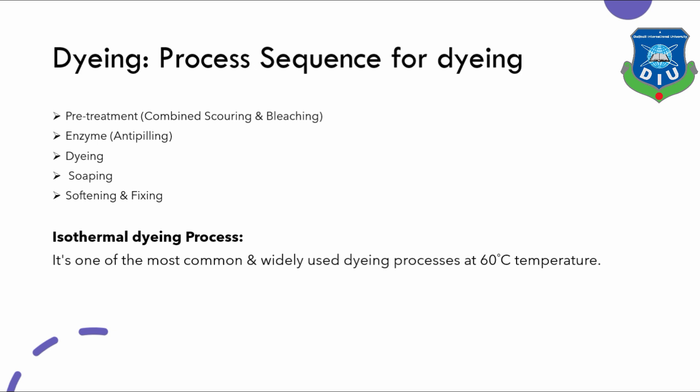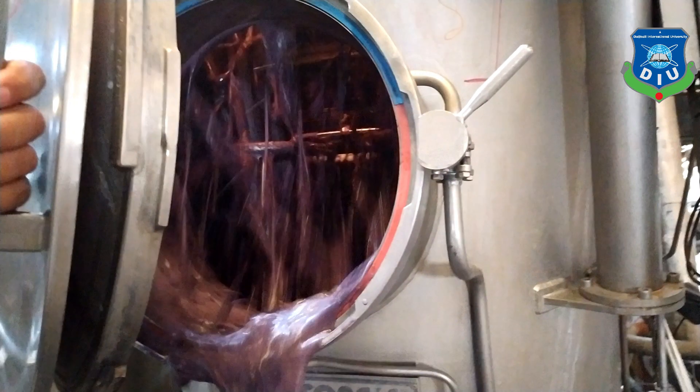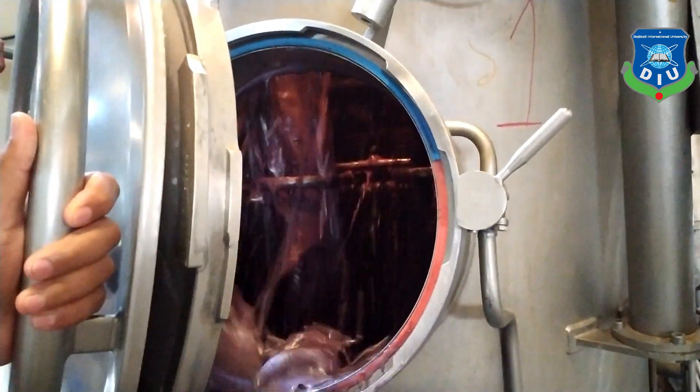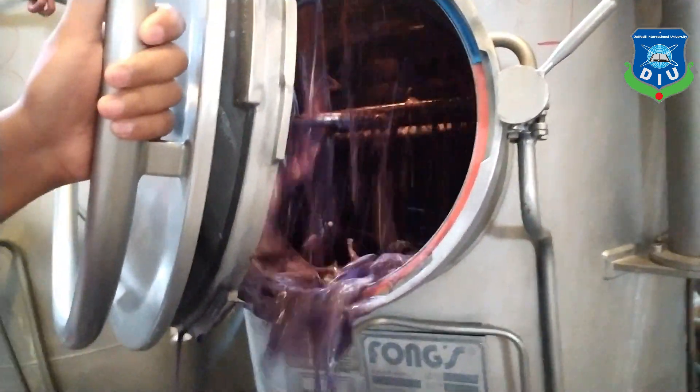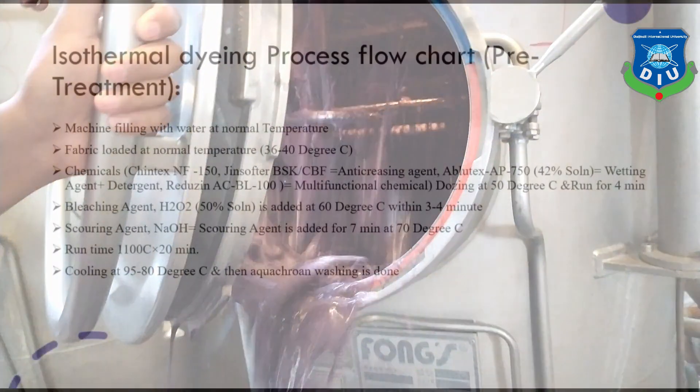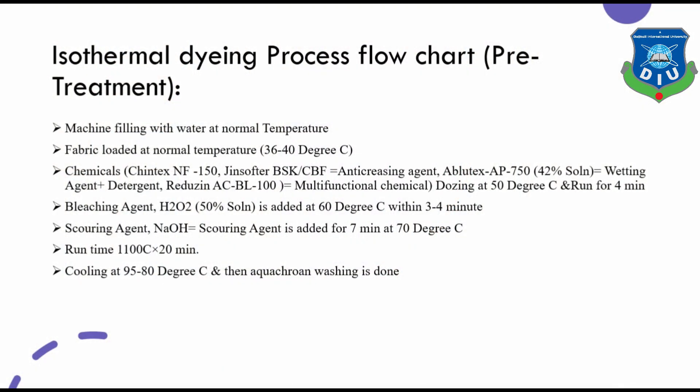Isothermal dyeing process is one of the most common and widely used dyeing processes, carried out at 60 degrees centigrade. Let's discuss the isothermal dyeing process step by step. First of all, we have to do our pre-treatment process.